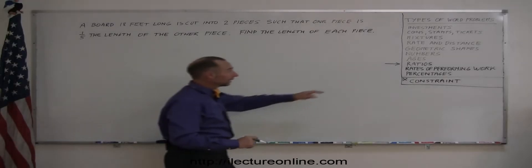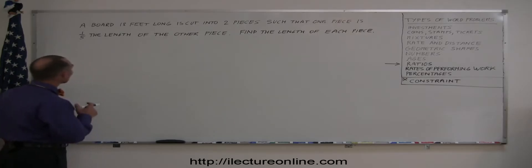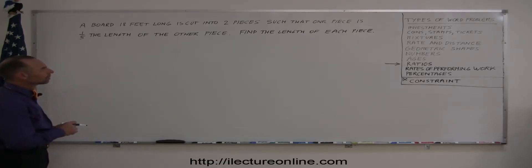In this case we're going to do a problem dealing with ratios and here's a good example for you. A board 18 feet long is cut into two pieces such that one piece is one-fifth the length of the other piece. Find the length of each piece.